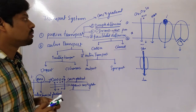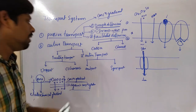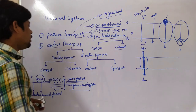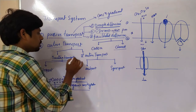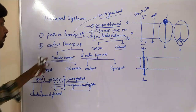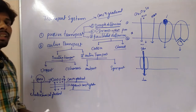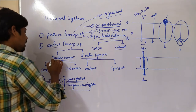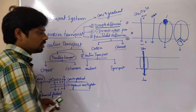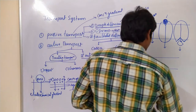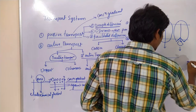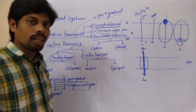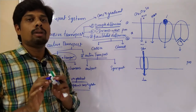Such type of transport is called passive transport. Coming to active transport. Here I divided active transport into two main parts: primary active transport and secondary active transport. Primary active transport utilizes energy in the form of ATP, and also utilizes proteins embedded in the plasma membrane — such proteins are called pumps.